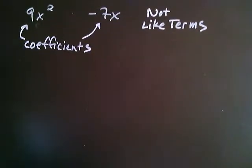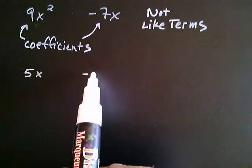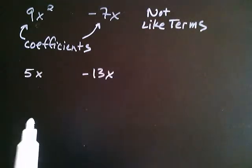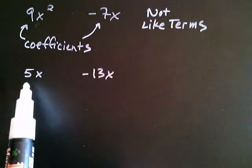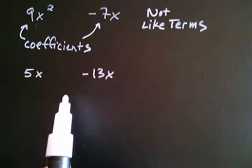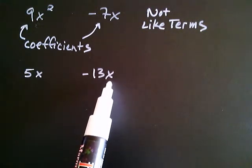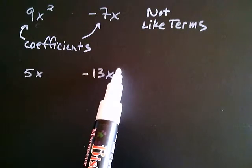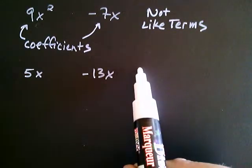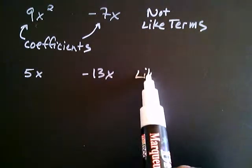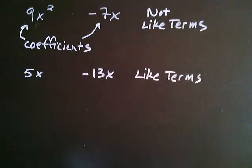Let me give you an example of two terms that are like terms. Let's say that you had 5x and negative 13x. The coefficients here are a 5 and a negative 13, but they're like terms because not only do they both have the base of x, but they also have the exponent of positive 1. So this is x raised to the first power, as is this. So these two terms are what we call like, or similar — sometimes you'll hear 'like terms' or 'similar terms.'